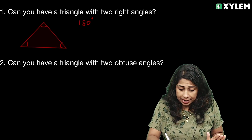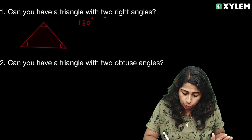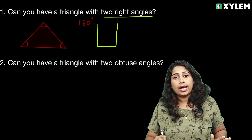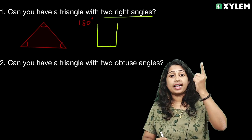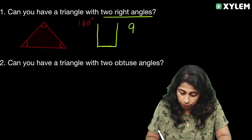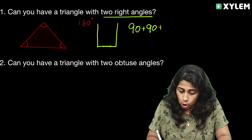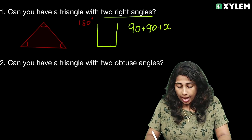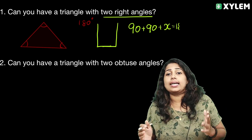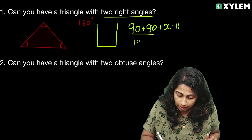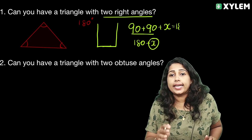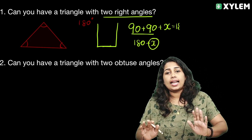Now, if there are two right angles in a triangle — two right angles, each equal to 90 degrees — then 90 plus 90 plus any third angle would already equal 180. That means the sum would exceed 180 degrees, which is not possible. So a triangle with two right angles is not possible.